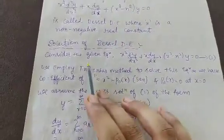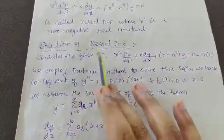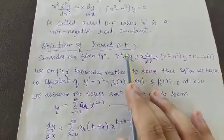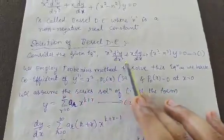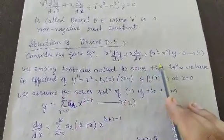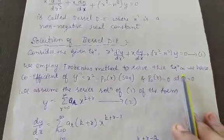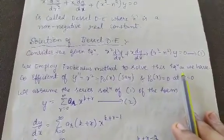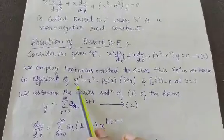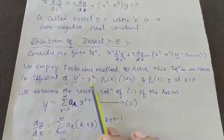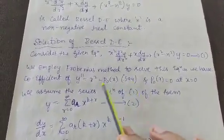Now we are going to find the solution of the Bessel differential equation. To do so, we employ the Frobenius method. We have the coefficient of y double-dash, which we call p₀(x), equal to x².